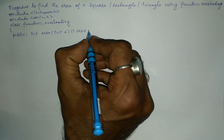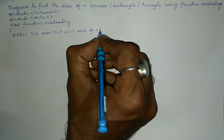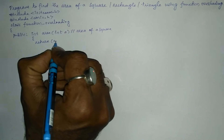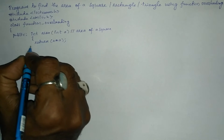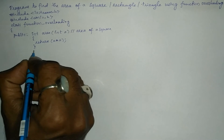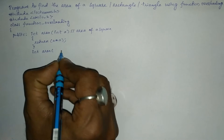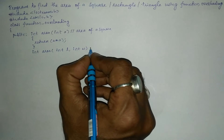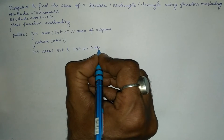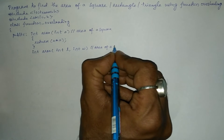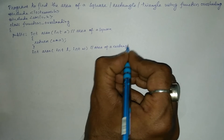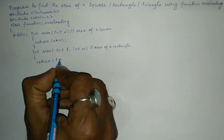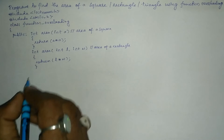This particular function belongs to a square and is used to find the area of a square. Inside the curly braces we return a*a with a semicolon. The next function definition is int area(int length, int width), which is used to find the area of a rectangle. Inside we return length*width.